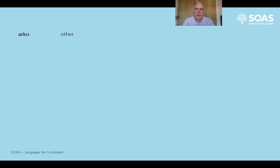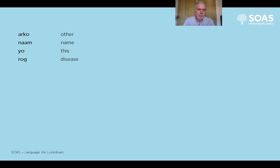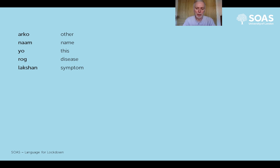'Arko' is an adjective meaning 'other'. 'Nam' is a nice simple word meaning 'name'. 'Yo' is an adjective meaning 'this'. 'Rog' is the noun that means 'disease' or 'illness'. 'Lakshan' means a symptom, a sign, or an attribute - but in this context, the symptom of a disease.